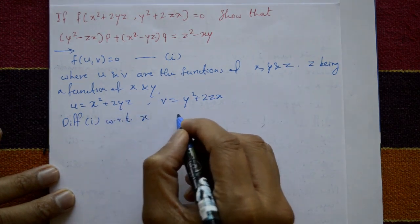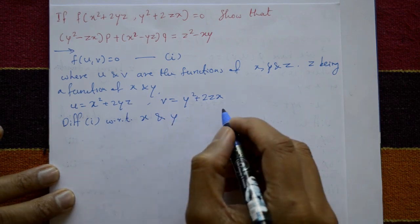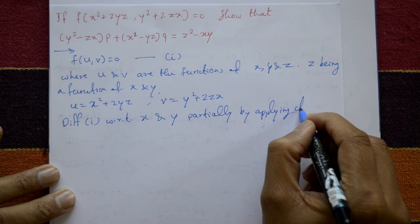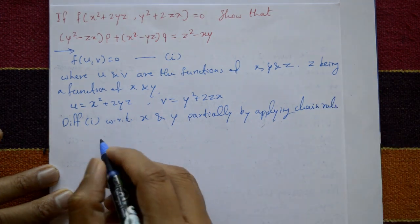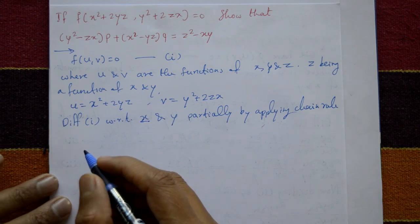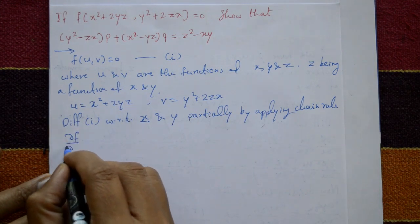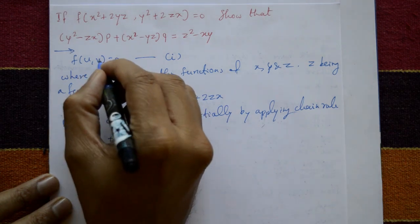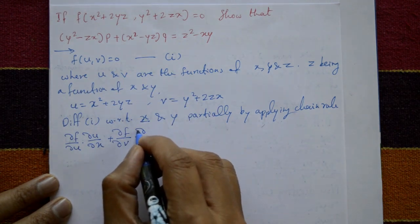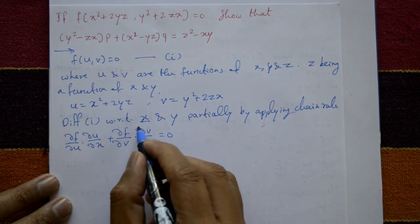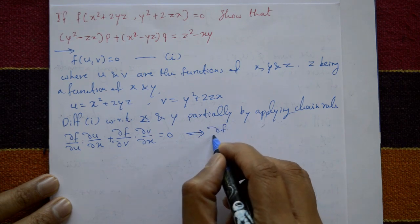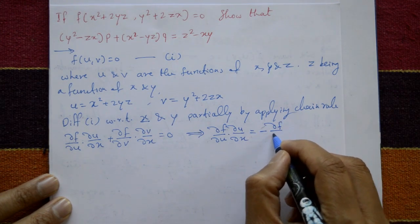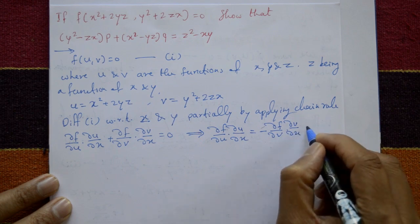Now differentiate equation number one with respect to x and y partially. Differentiating with respect to x by applying the chain rule: ∂f/∂u · ∂u/∂x + ∂f/∂φ · ∂φ/∂x = 0. Shifting the second term to the right-hand side gives ∂f/∂u · ∂u/∂x = −∂f/∂φ · ∂φ/∂x. Call this equation number two.